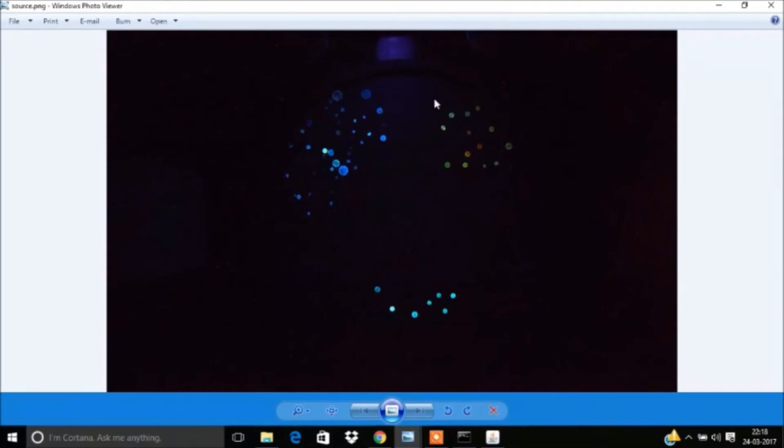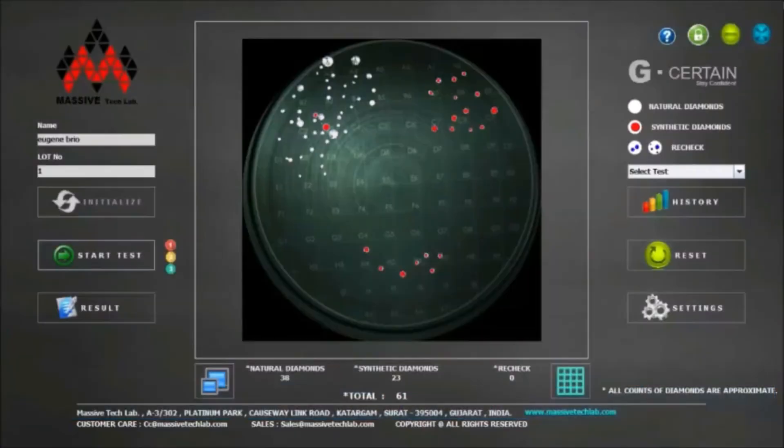We need to validate diamonds which are having similar color as upper right side cluster. Bottom side clustered diamonds need any further testing. They are straight away synthetic ones.